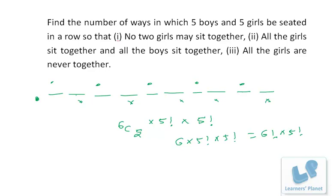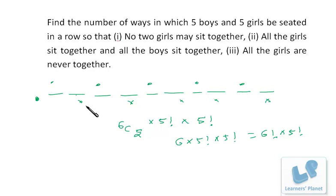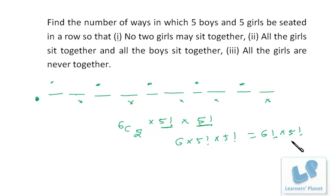So friends, I hope you are clear. Let me repeat it once more. Since the girls have to sit alternately, we started with the first position and took them to the last position. So we are left with six positions for the girls. We select five places from six, arrange the five girls in 5! ways, and the remaining five places are for boys in 5! ways. So the answer is 6! × 5!.